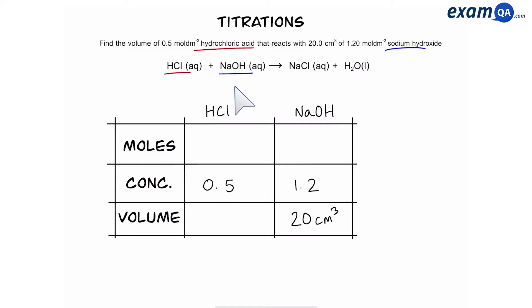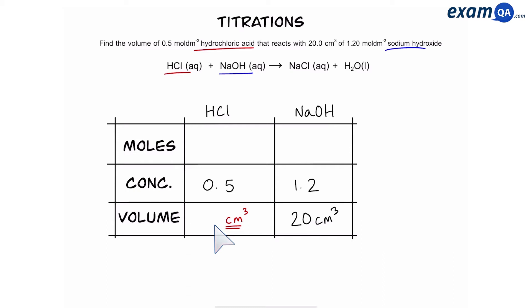Then we're going to read the question and write down whatever information we've been given. We've been given the concentration of sodium hydroxide and the volume of sodium hydroxide, and we've also been given the concentration of hydrochloric acid. We want to work out the volume of hydrochloric acid. Here's a rule: to find something out, you have to know the other two. If you want to work out the volume of hydrochloric acid, you have to know concentration and moles. Since we don't know the moles of hydrochloric acid, we can't use that method. So, whose moles can we work out? We can work out sodium hydroxide's moles, and then compare that with hydrochloric acid.